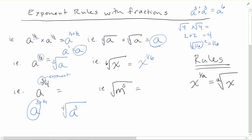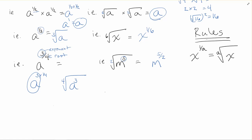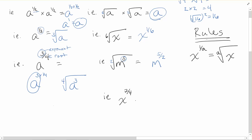The bottom of the fraction becomes the order of the root — fifth, sixth, seventh, etc. Working backwards: if you have the square root of m to the fifth, there's an invisible 2 in the square root, meaning you need a 2 on the bottom to make the second root. The power of 5 gives you a 5 on top. So that's m to the power of 5/2. Similarly, x to the power of 7/4 gives you the fourth root of x to the seventh.